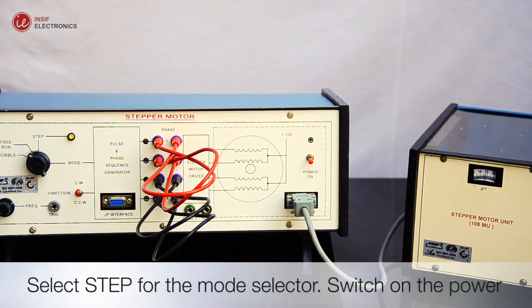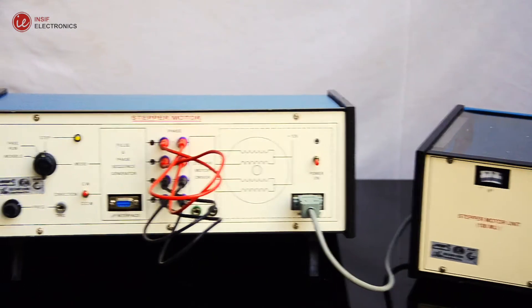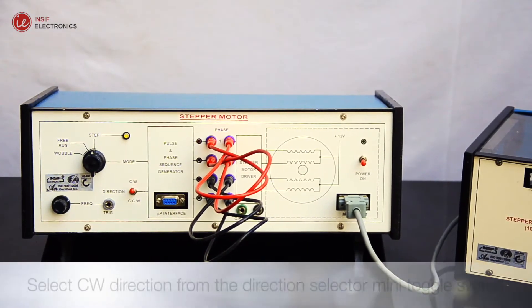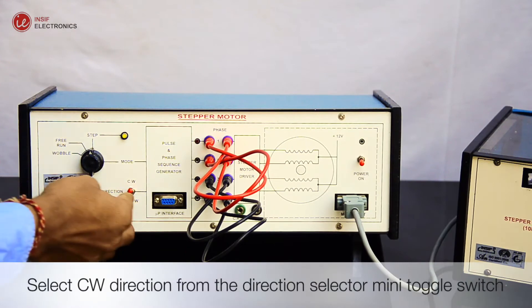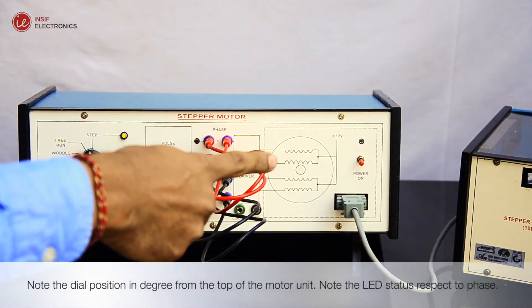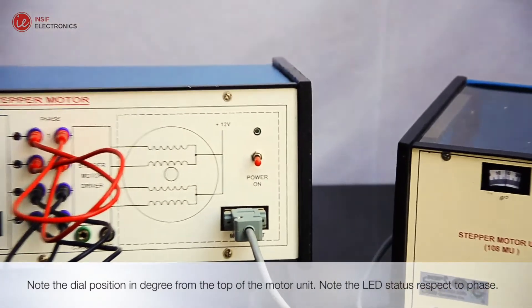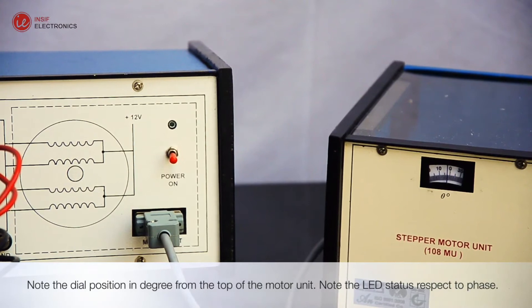Select step for the mode selector. Select clockwise direction from the direction selector mini toggle switch. Note the dial position and degree from the top of the motor unit, and note the LED status with respect to phase.